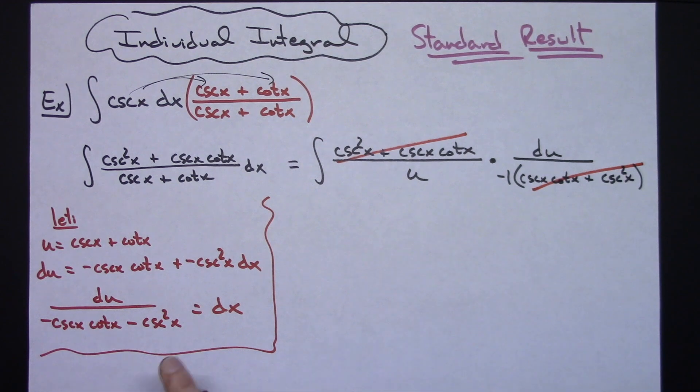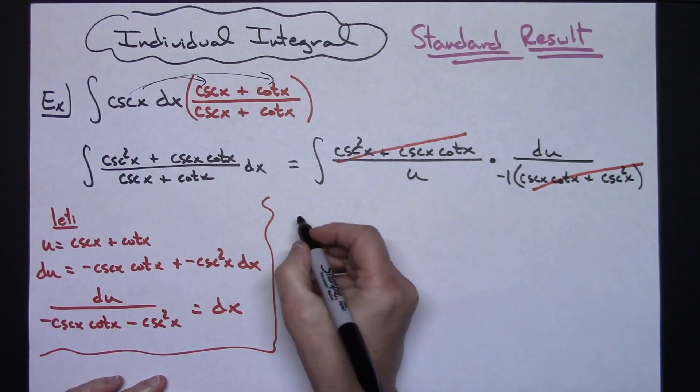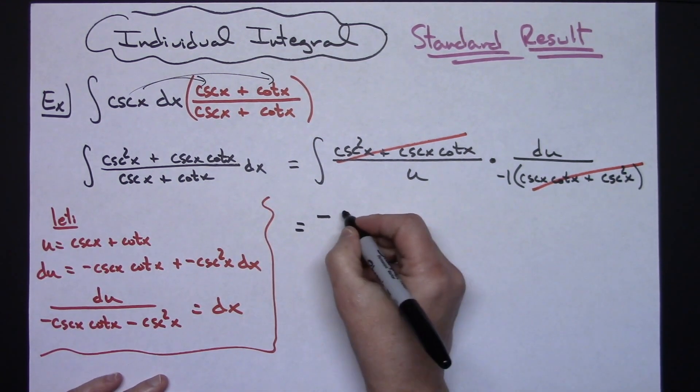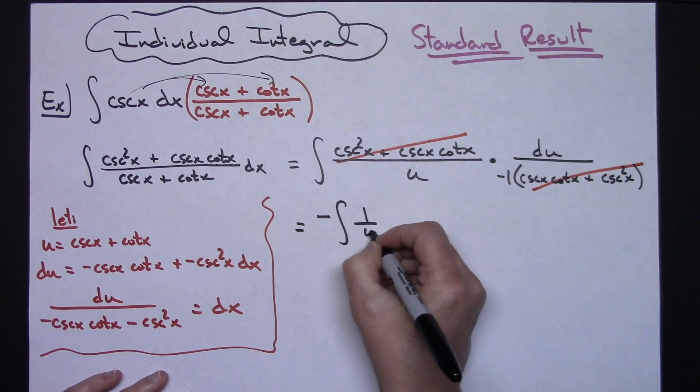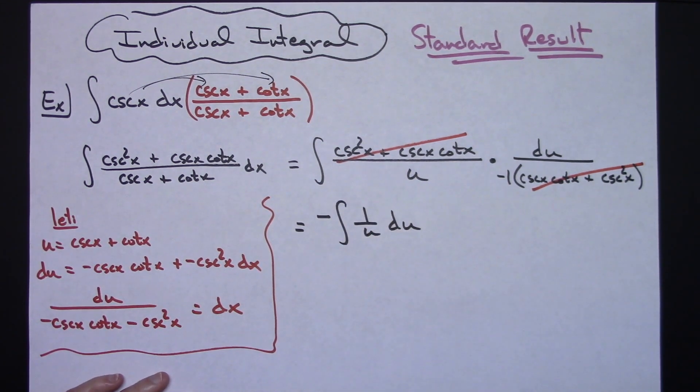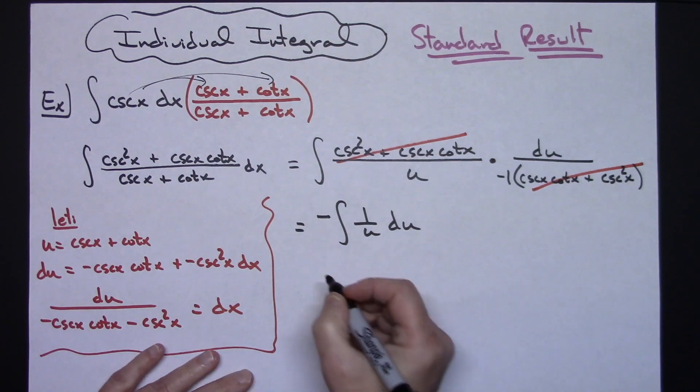I can cross out the numerator and denominator and pull the negative out in front. So negative integral of 1 over u du integrates easily to the natural log.